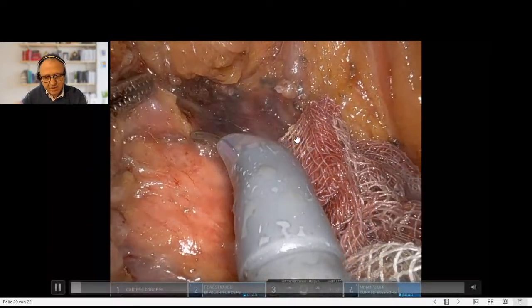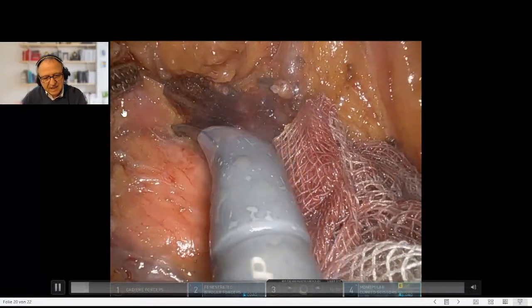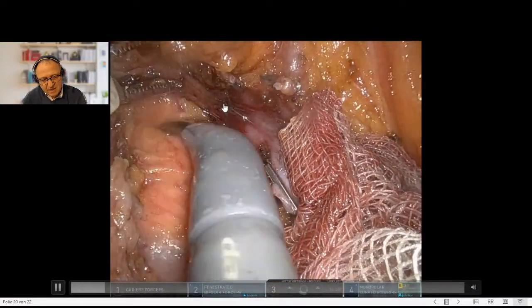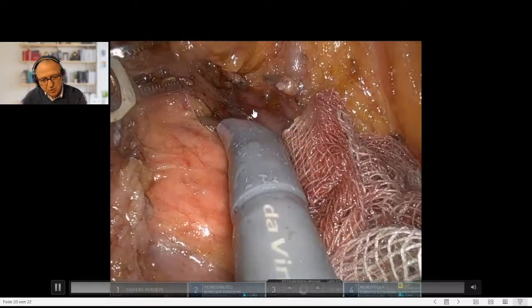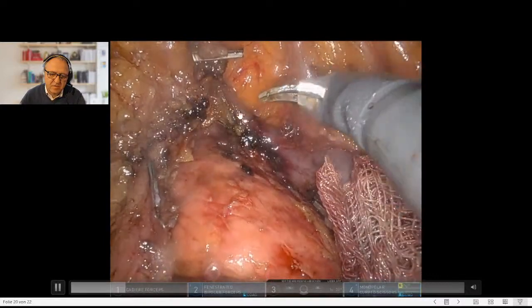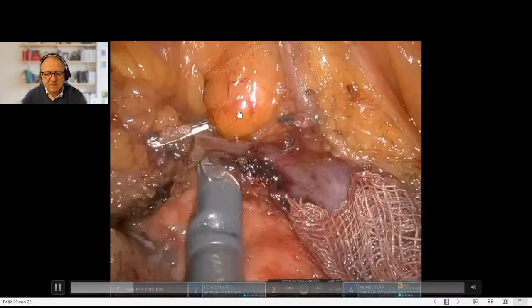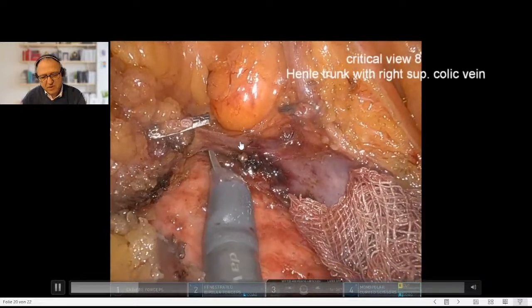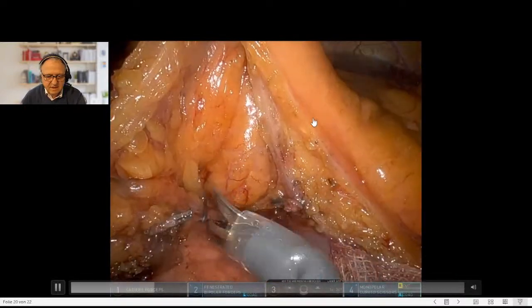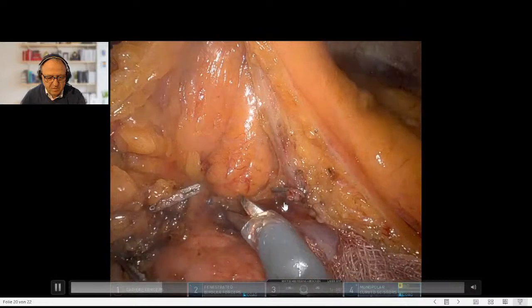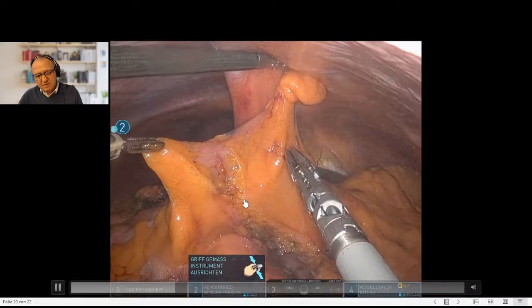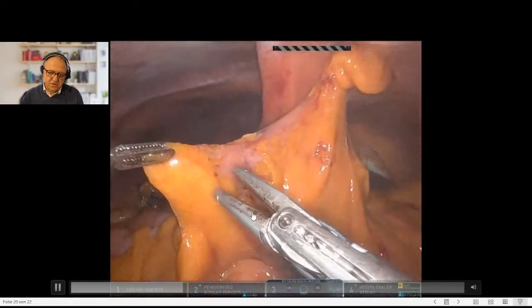Here the pancreatic head, Henle trunk is up here. You see one lymph node I try to dissect out. That's the reason why I go somewhat dorsal to the Henle trunk. All the lymphatic tissue is mobilized. The last vessel that remains is the superior right colic vein, Henle trunk, and the SMV. Here you can see the right branch of the middle colic artery. That was the final step of the central dissection.